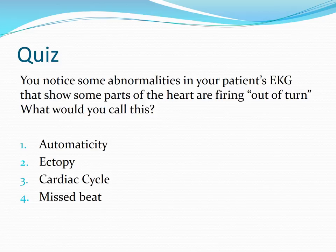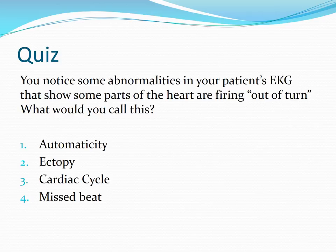Quick quiz: You notice some abnormalities in your patient's EKG that show some parts of the heart are firing out of turn. What would you call this? 1. Automaticity. 2. Ectopy. 3. The cardiac cycle. 4. A missed beat. The correct answer is ectopy. Remember, an ectopic focus is a little group of cells in the heart that is firing out of turn and not following the cardiac cycle.